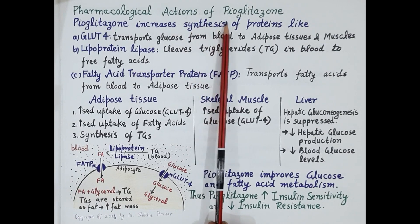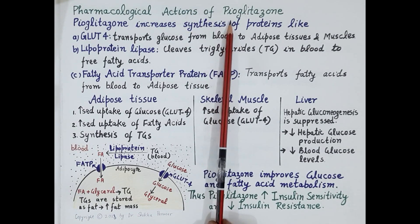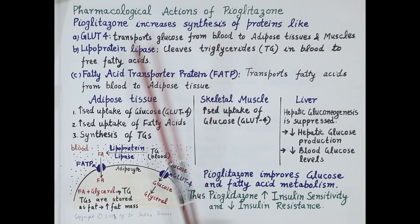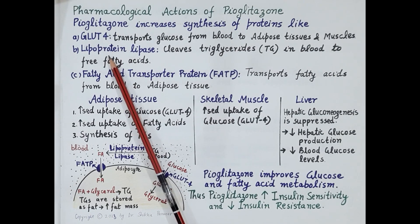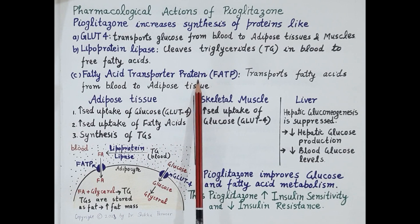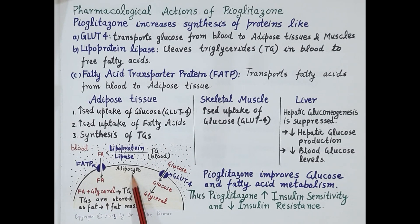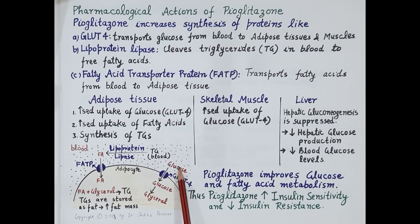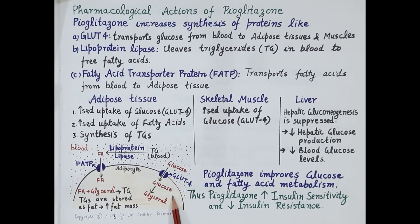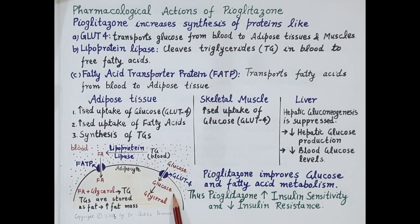Pioglitazone increases synthesis of proteins required for the metabolism of glucose and fatty acids — including GLUT4 (glucose transporter 4), lipoprotein lipase, and FATP (fatty acid transport protein). Look at this figure — this is a fat cell or adipocyte. GLUT4 mediates transportation of glucose from the blood into body cells like adipocytes and skeletal muscles, resulting in increased uptake of glucose by those cells. In the adipocytes, this glucose is converted to glycerol.